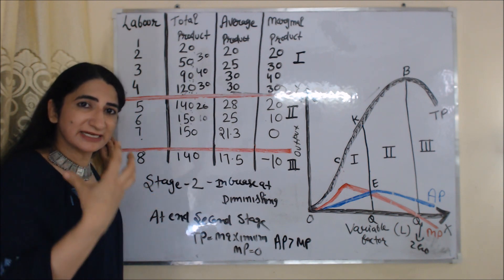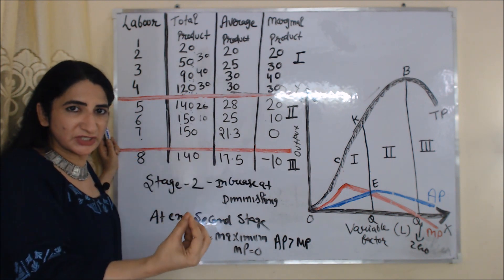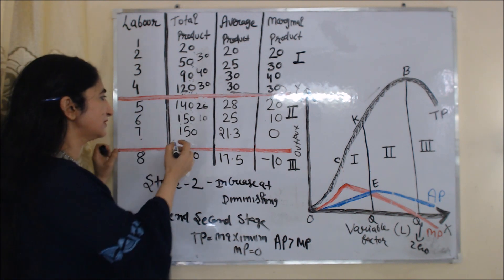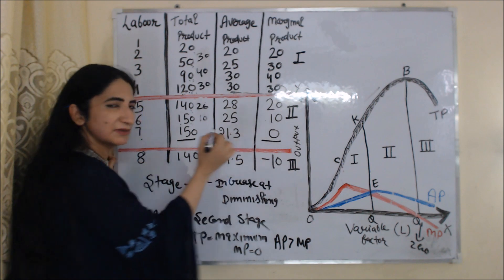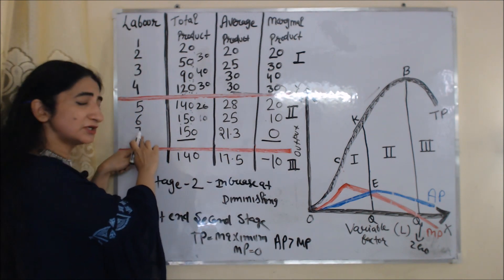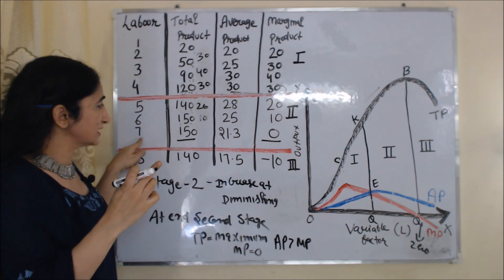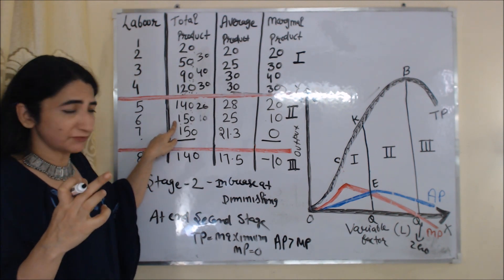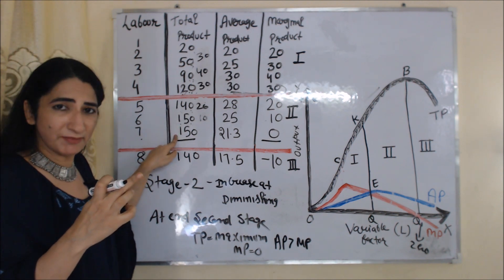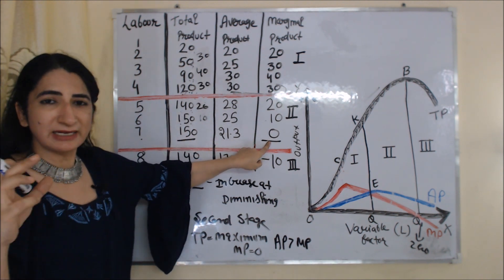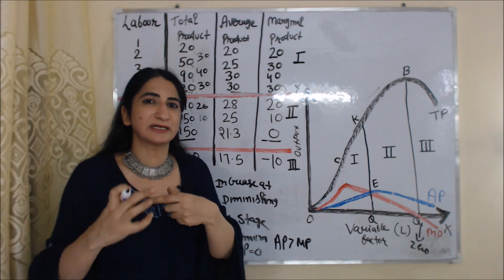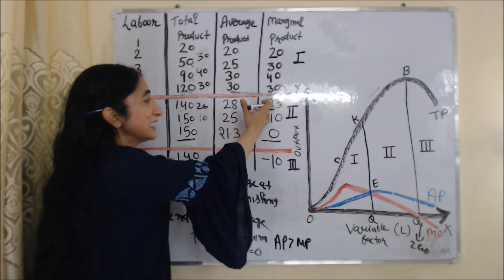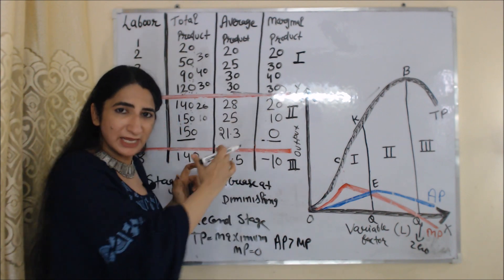Second: at the end of the second stage, TP becomes maximum and MP becomes zero. At the 7th unit, our second stage ends — TP is 150 at both the 6th and 7th units, meaning it is no longer increasing; it has become maximum. At this point, MP is zero. Third: during the second stage, AP is more than MP. You can see AP is greater than MP throughout this stage.